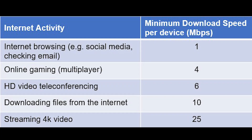As you can see in this table, the more complex the internet activity you're performing on your device, the more bandwidth you need. If you're doing very simple things like checking email or doing some Google searches, you only need about one megabit per second of bandwidth. Conversely, if you're doing the most bandwidth-intensive activity — streaming ultra high definition 4K video — you'll need at least 25 megabits per second of bandwidth in order to support that activity.